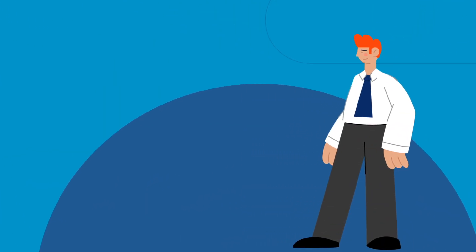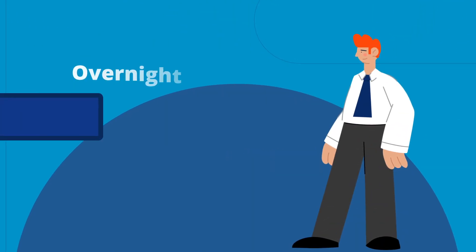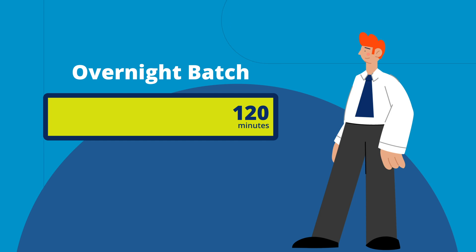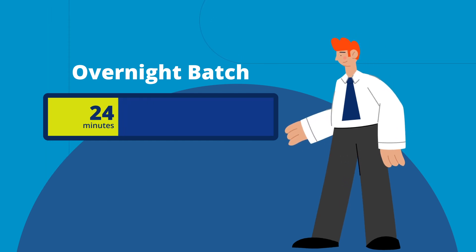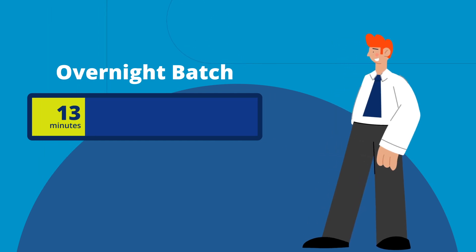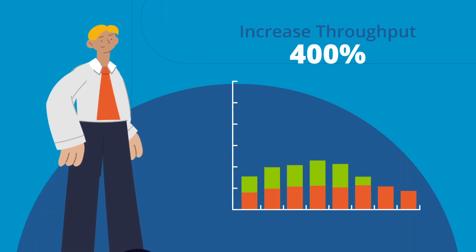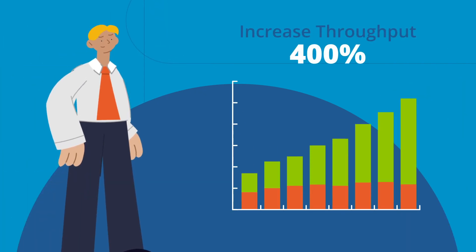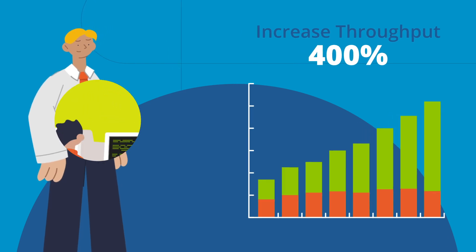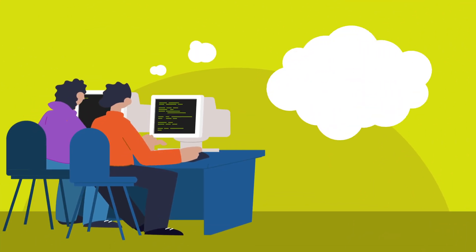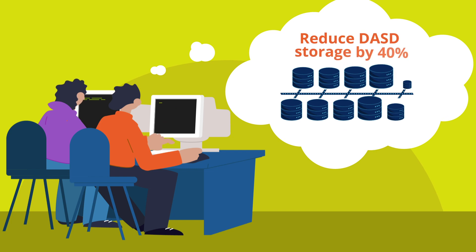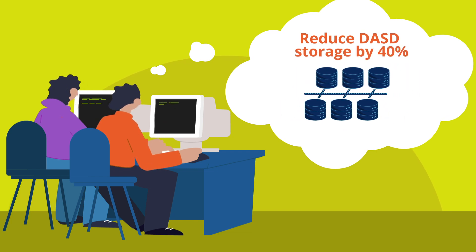But what if your CIO knew that it is ridiculously simple to cut the time on a critical mainframe vSAM process from 120 minutes to 13? They would do it, right? Suppose marketing knew you could increase transaction throughput by up to 400%. Data center operations teams would certainly also welcome SLA improvement and a 40% reduction in DASD storage.